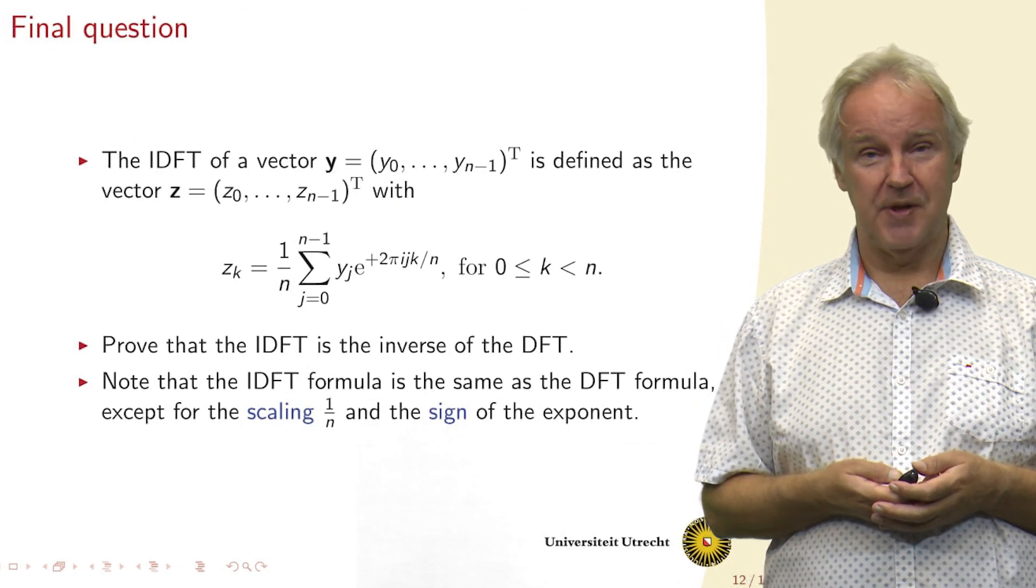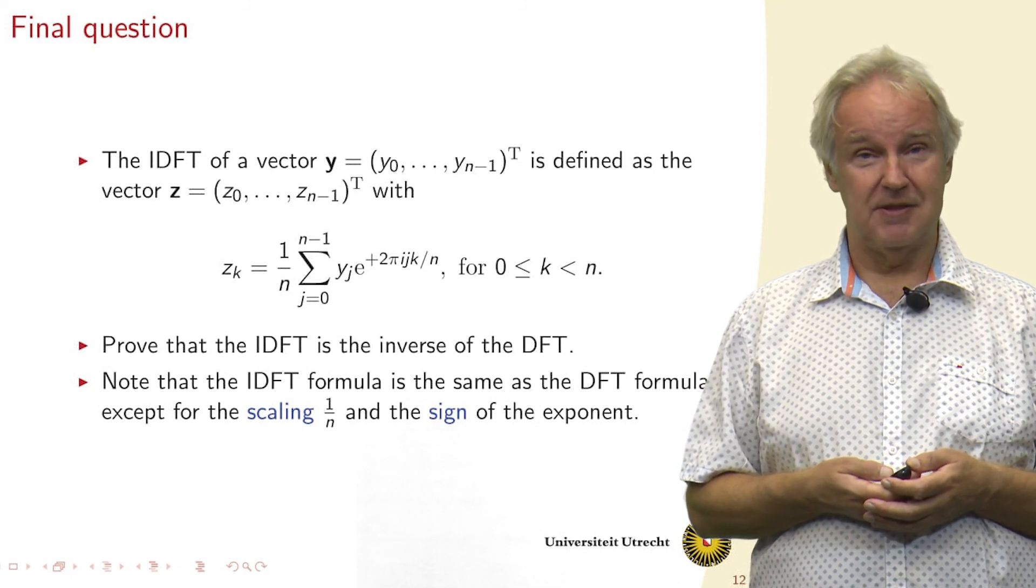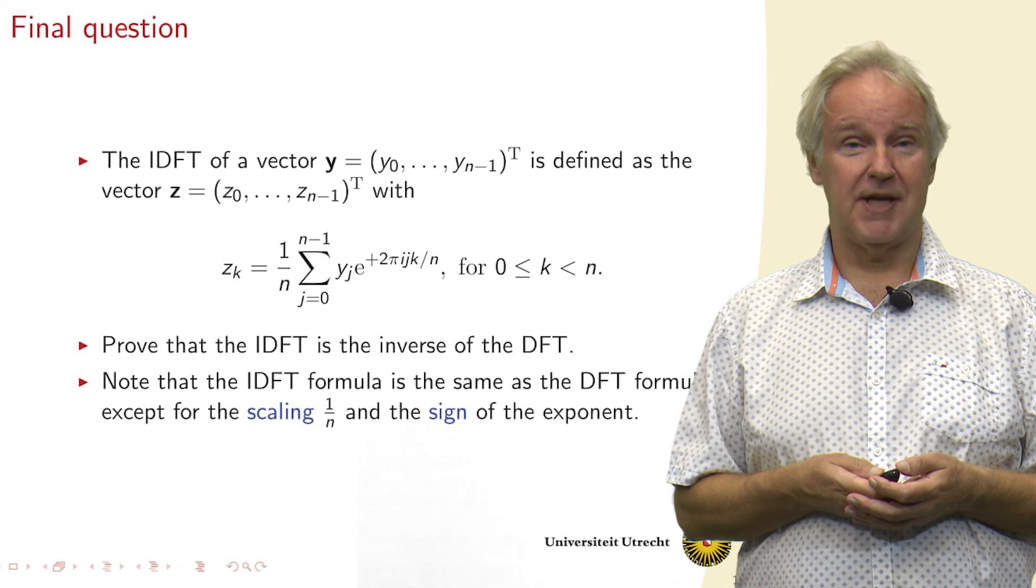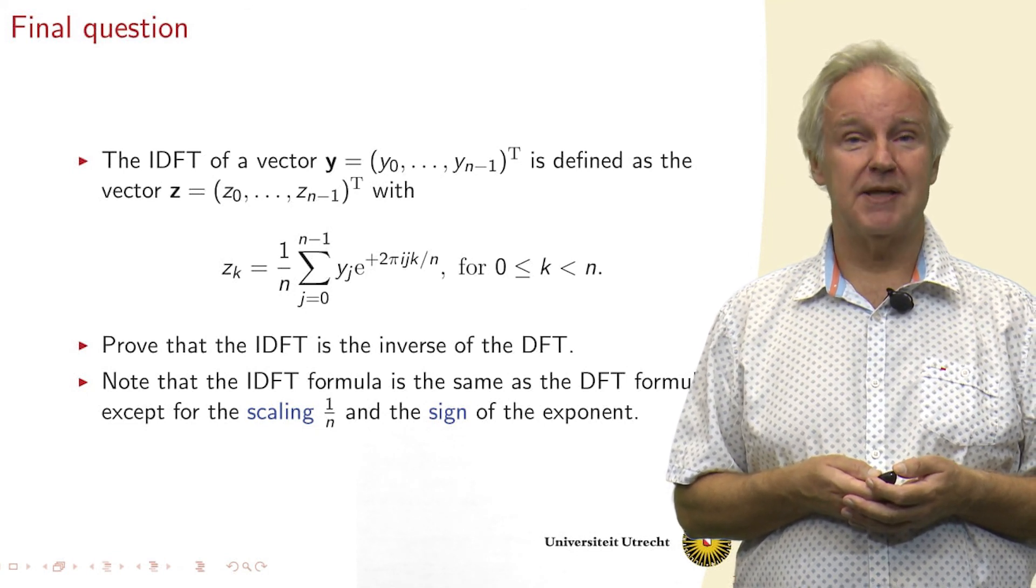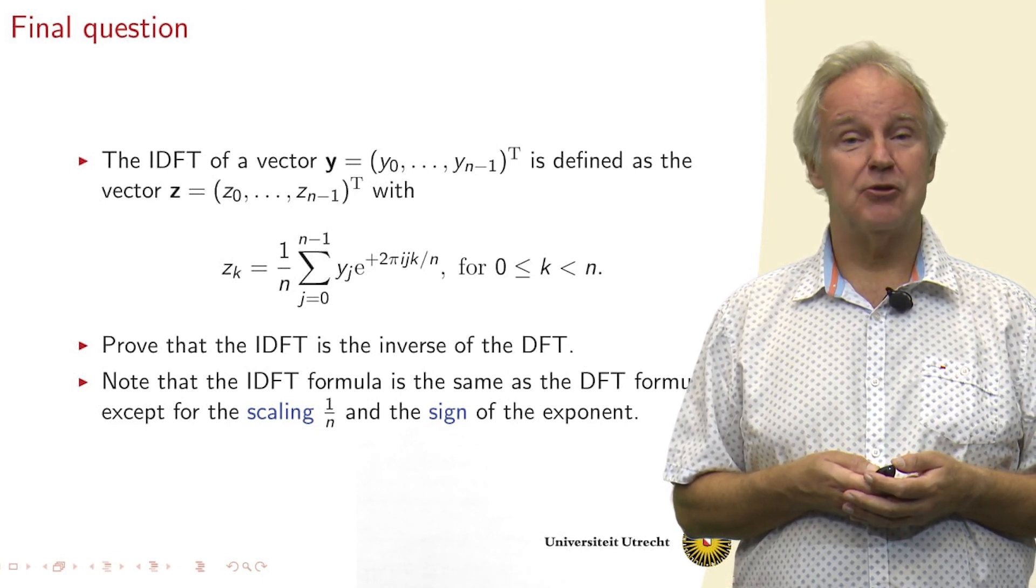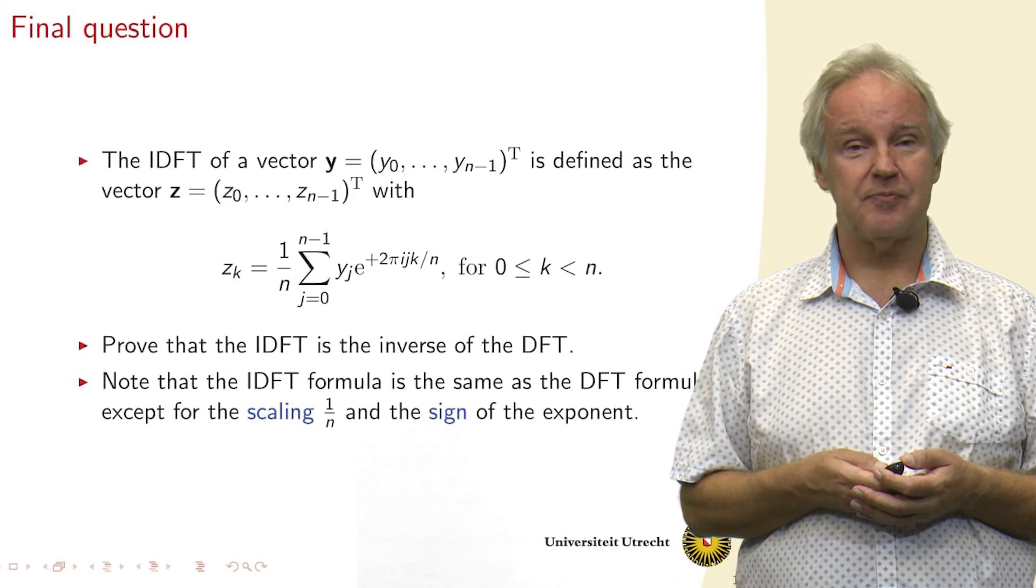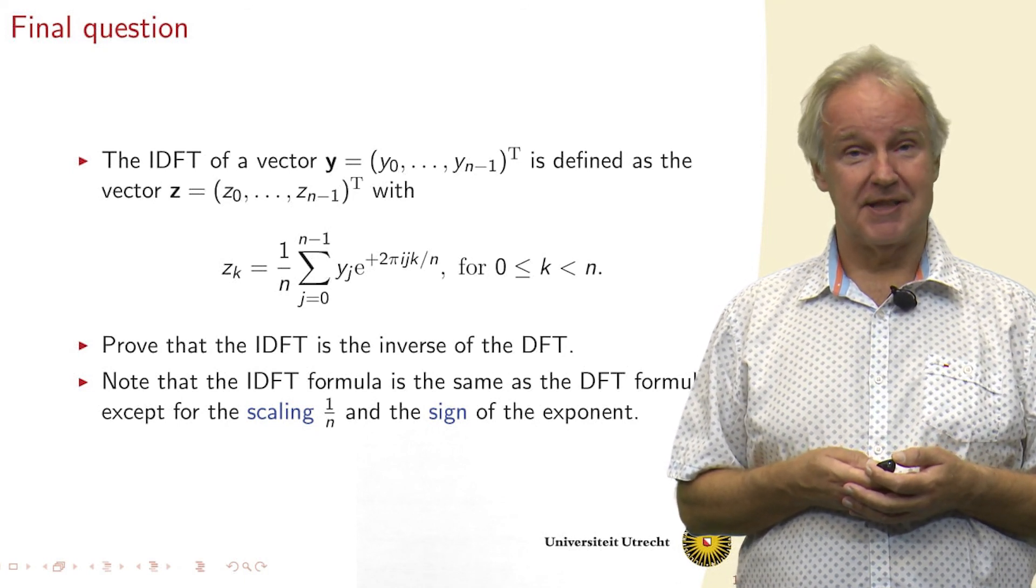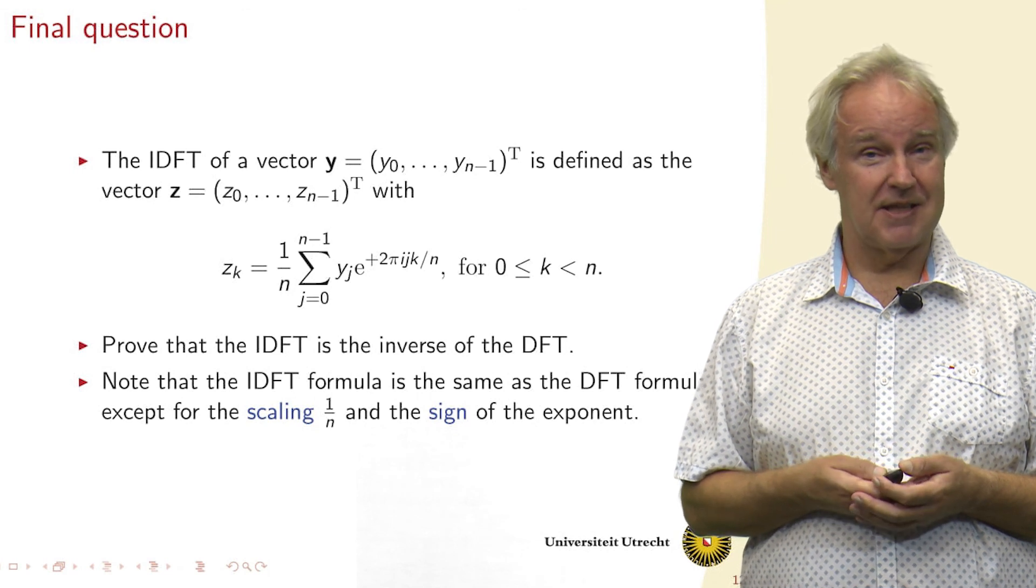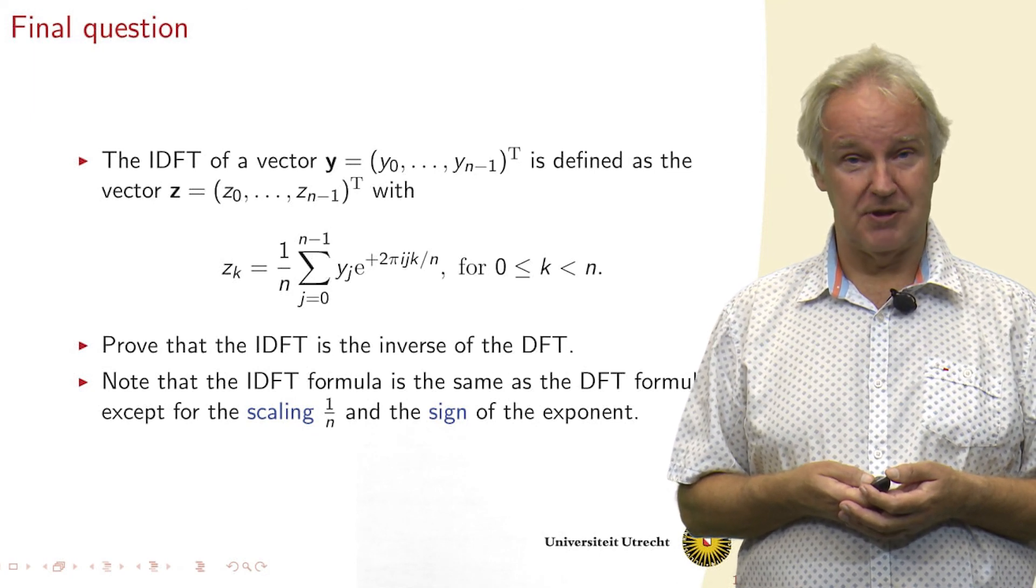Now a question to you. We can define the inverse DFT of a vector y as the vector z, both of length n, with zk equals 1 over n times the sum from j equals 0 to n minus 1 of yj times e to the power plus 2 pi i j k divided by n. Now, can you prove that the inverse DFT is the inverse of the DFT? And note that it looks very much alike. There's only this extra factor 1 over n that we put here. And there's a plus in the exponent instead of a minus.